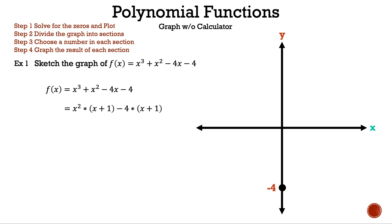So now we have x² times the quantity (x + 1) minus 4 times the quantity (x + 1). Combining the terms in front gives us the quantity (x² - 4) times the quantity (x + 1). We can factor x² - 4 because it is a difference of squares.